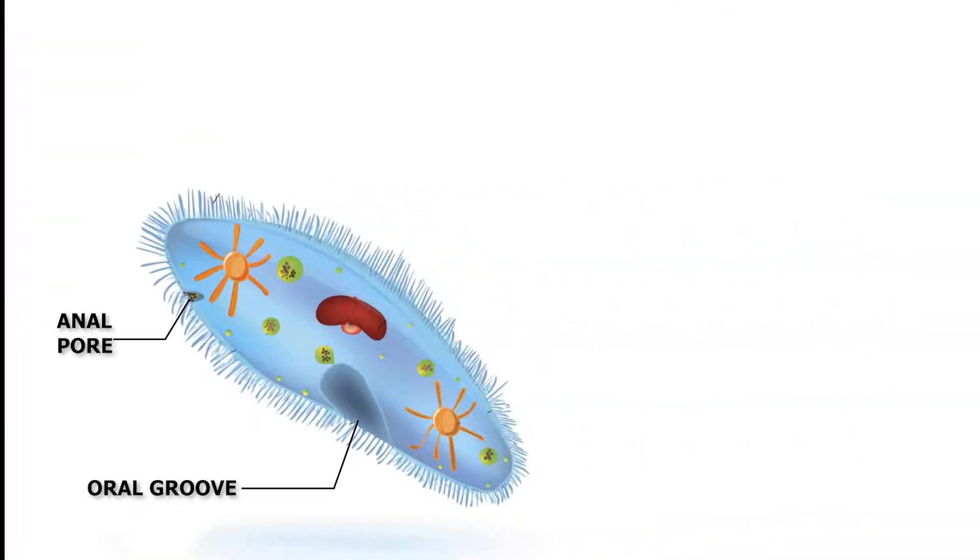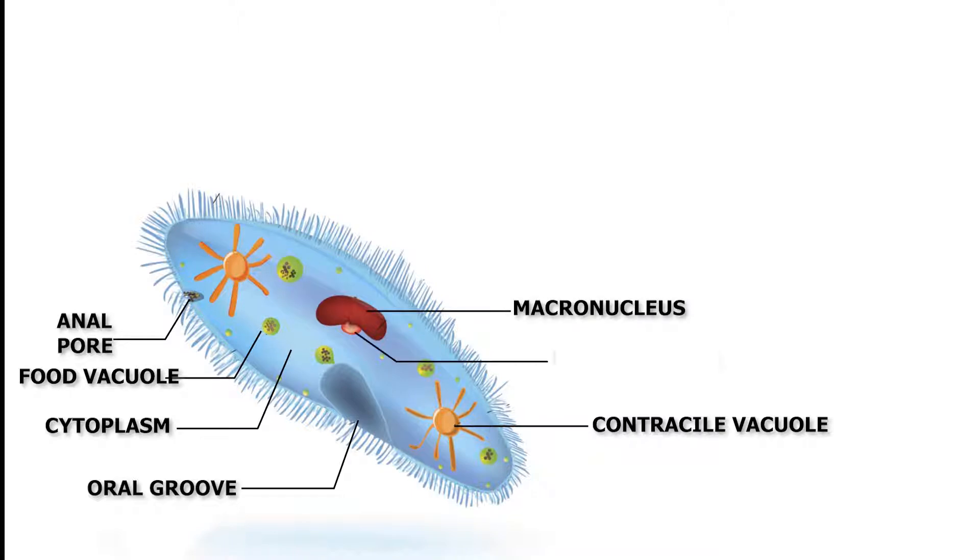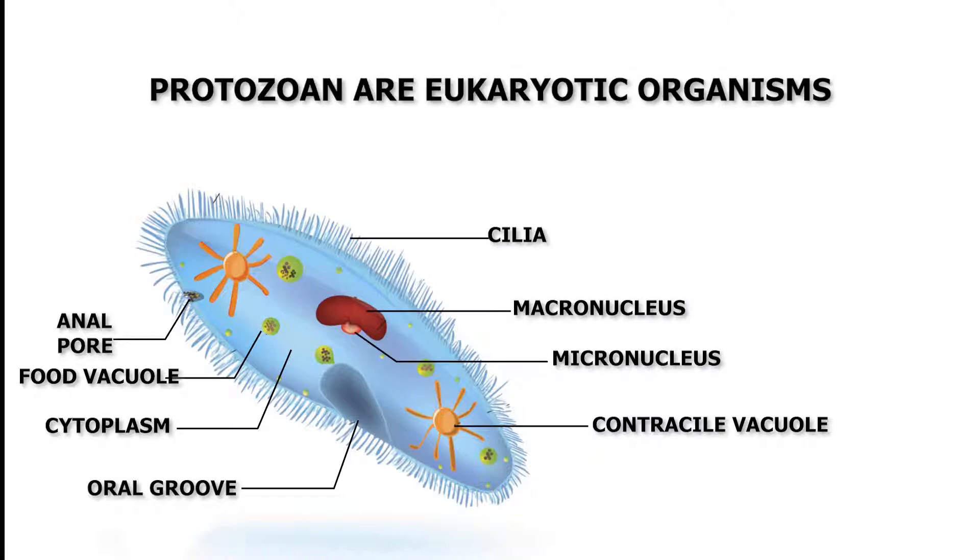They have complete cells and organelles covered in membranes, and thus they are eukaryotic organisms. They are found both freely as well as existing in tissues of plants and animals.